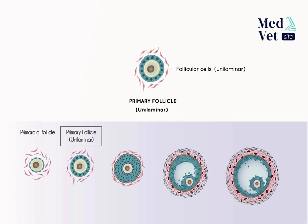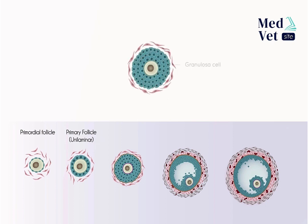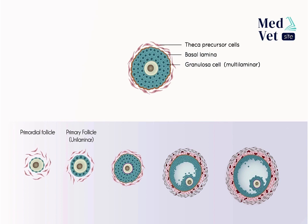The follicular cells, now called granulosa cells, divide to form several layers around the oocyte, making the follicle multilaminar. A basal lamina then arises around the granulosa cells, delimiting the follicle from the surrounding ovarian stroma, originating from secretions of the granulosa cells themselves. Additionally, the ovarian stromal cells begin to organize around the basal lamina to form the precursor cells of the theca folliculi. Granulosa cells and oocytes also secrete a mucoid substance deposited on the oocyte's cell membrane, forming the zona pellucida — a layer of glycoproteins.